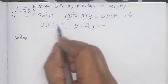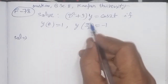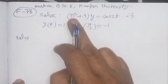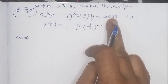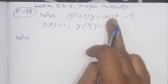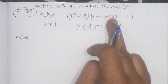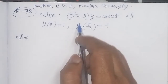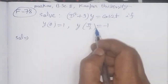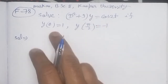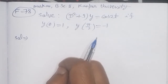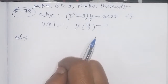So at x = 0, y = 1, and at x = π/2, y = -1. We will solve the differential equation to find the general solution. Two arbitrary constants will appear, and using the two boundary conditions, we will find c1 and c2 to get the particular solution.